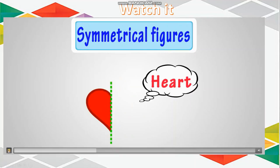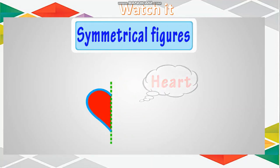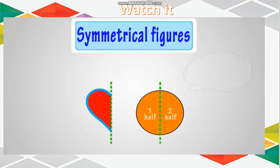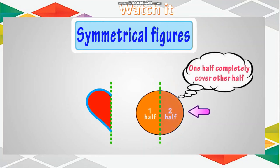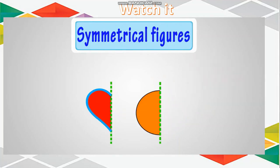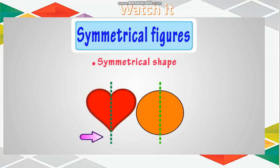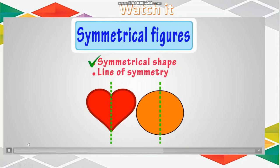Yeah. It completely covers the other half. And when you can fold a shape in half and one half exactly covers the other half, we can say that the shape is symmetrical. And the fold line is the line of symmetry. So this shape is a symmetrical shape. And this line of fold that divides this shape into two similar halves is the line of symmetry.